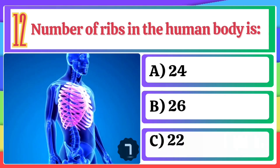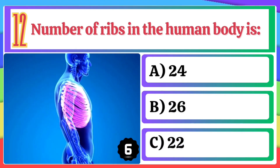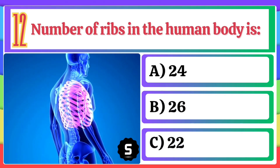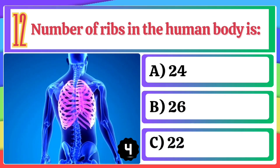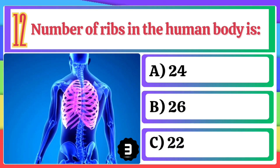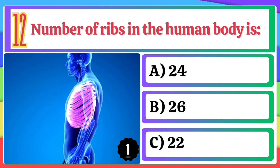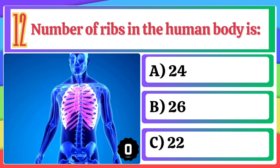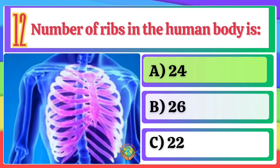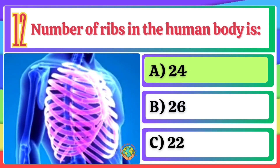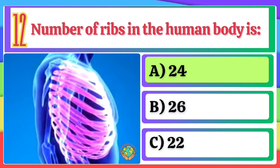Number of ribs in the human body is: A) 24, B) 26, C) 22. The correct option is A, 24.